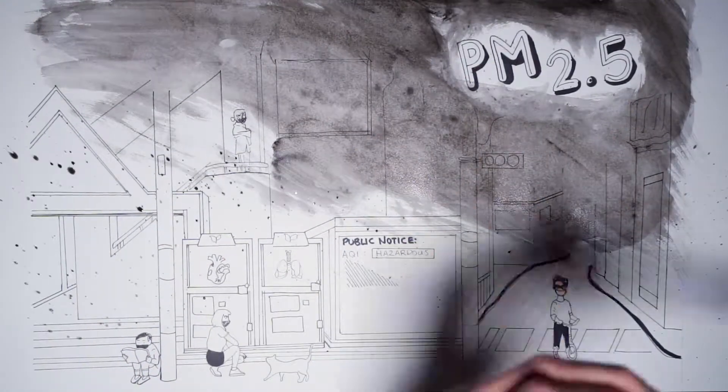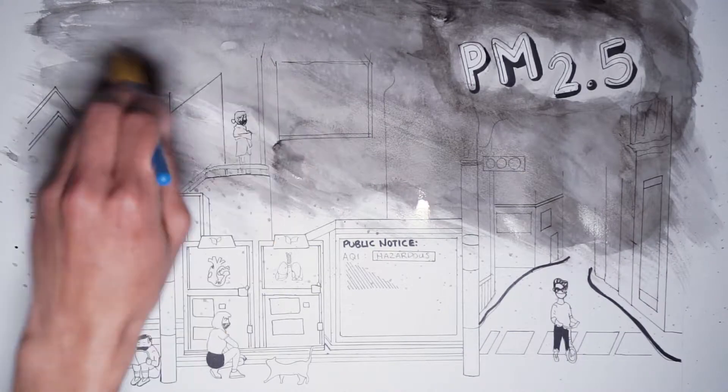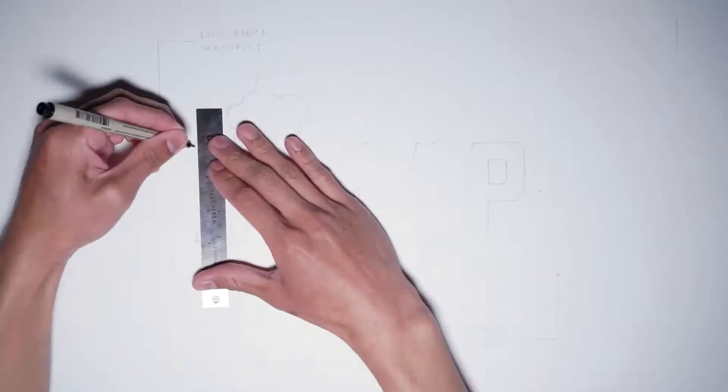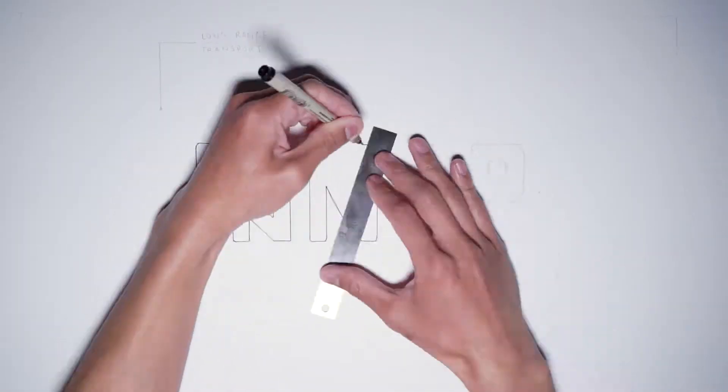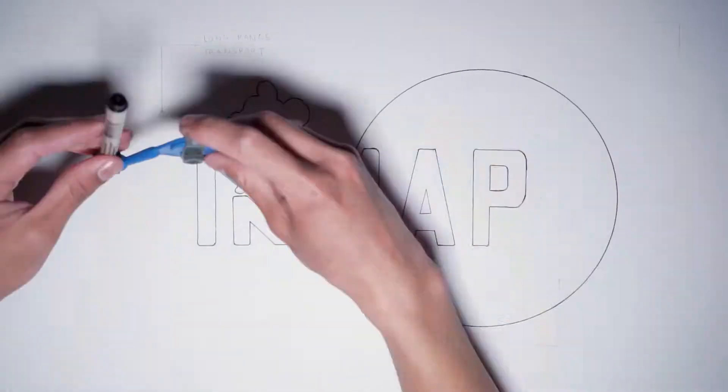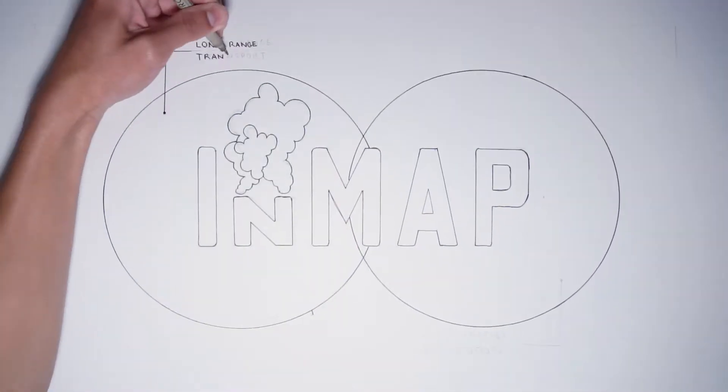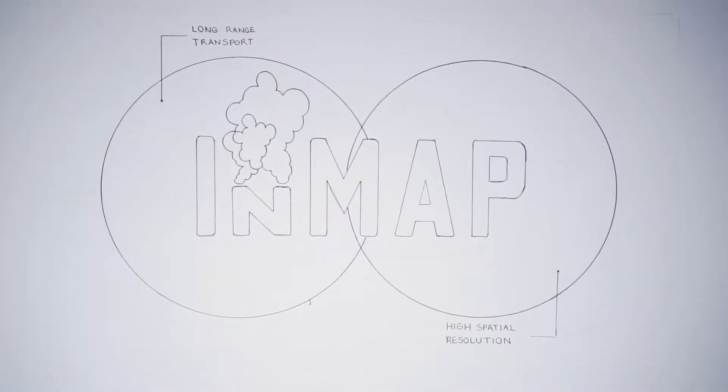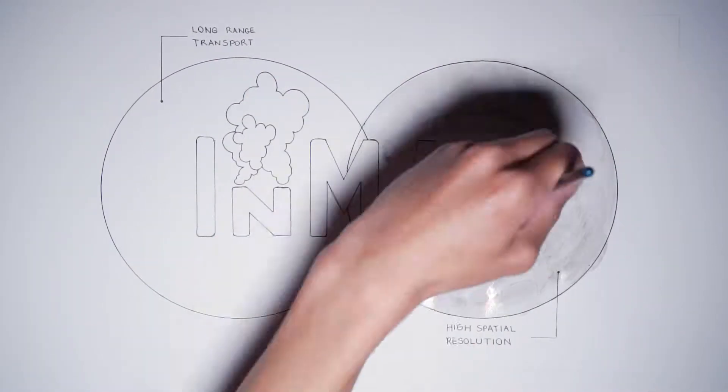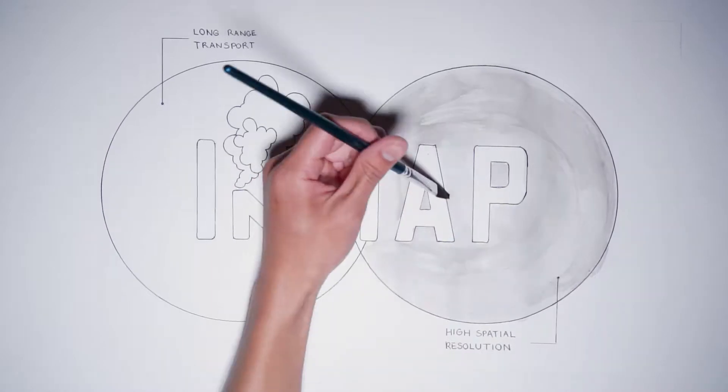Our analysis tracked the health impacts separately for all sources of this pollution in the continental US. We used the NMAP air pollution model, which has a unique combination of spatial detail in urban areas, long distance tracking of pollution, and ease of use that allows us to study air pollution with a high level of detail.